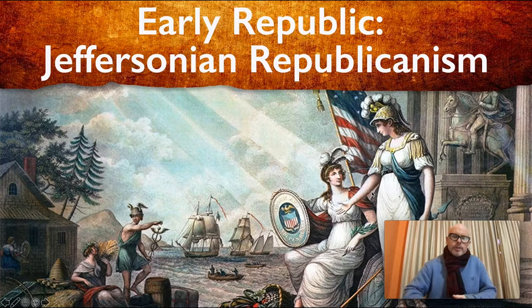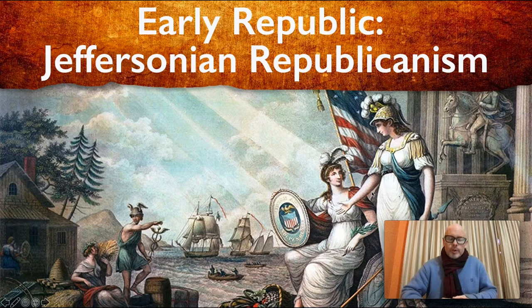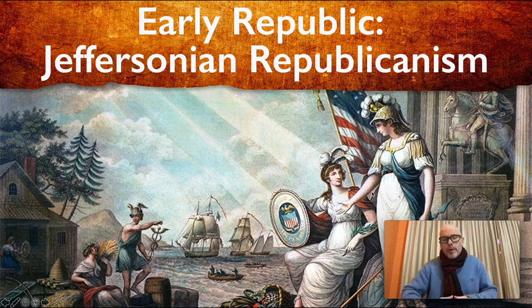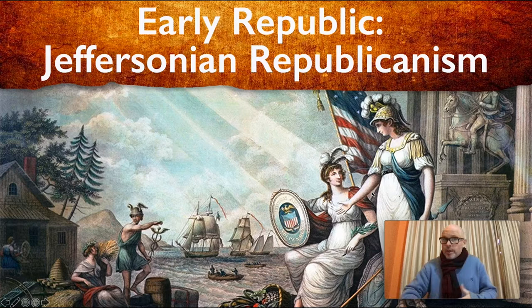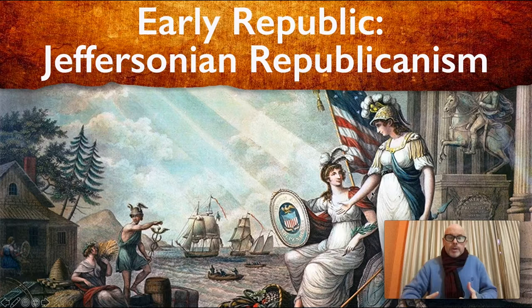In 1800, the United States was still a new country, and it was uncertain if it was going to survive. It had only been about 10 years since the new Constitution was put into effect. The real worry was the election of 1800, moving from a Federalist president to a Democratic-Republican president. Historically, power exchanges involved violence, but the election of 1800 — also known as the revolution of 1800 — was peaceful, and Thomas Jefferson became the new president.